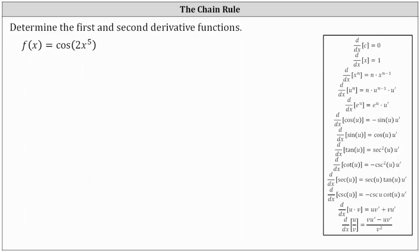We're asked to determine the first and second derivative functions given f of x equals cosine of two x to the fifth. Notice f of x is a composite function where the outer function is the cosine function and the inner function is two x to the fifth.